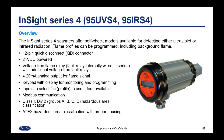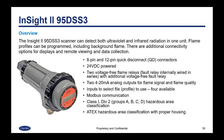InSite Series 4 is similar to the InSite we just covered and has all the same features. The InSite 2 has two connectors — an 8-pin and a 12-pin quick disconnect — because it has two flame relays instead of one. It still has the fault relay and offers two 4 to 20 milliamp analog outputs — one for flame signal and one for flame quality. It still has four available profiles, Modbus communication, Class 1 Div 2 as standard, and ATEX hazardous area classification available with proper housing.